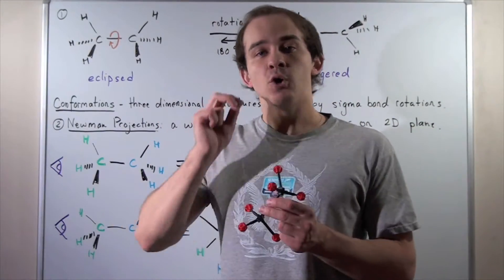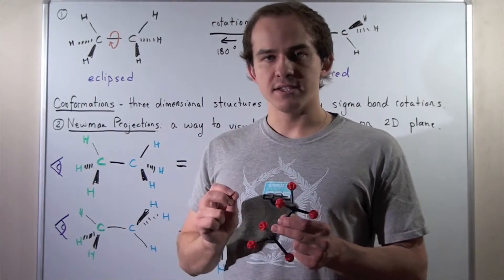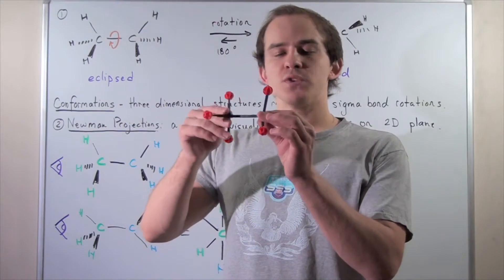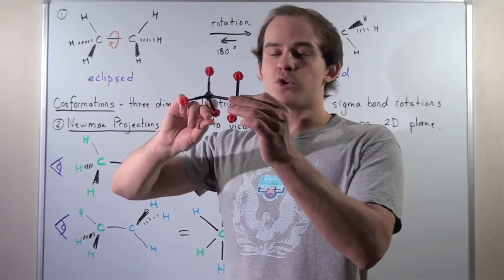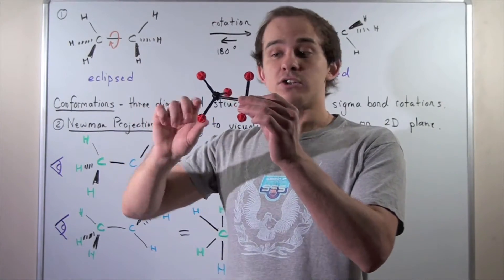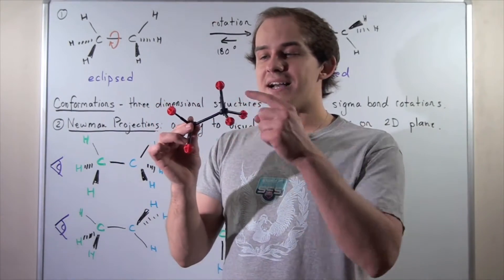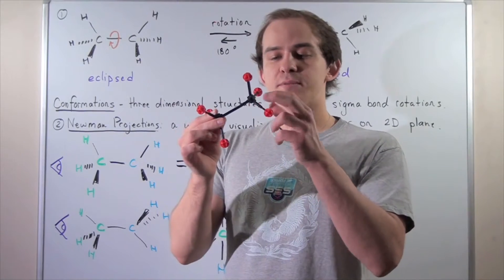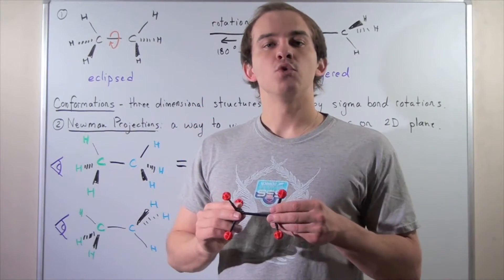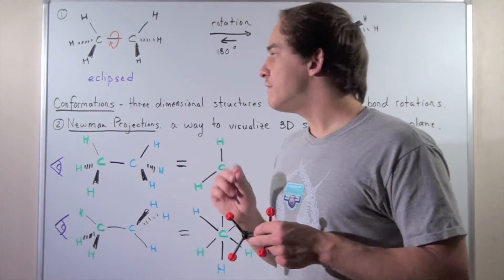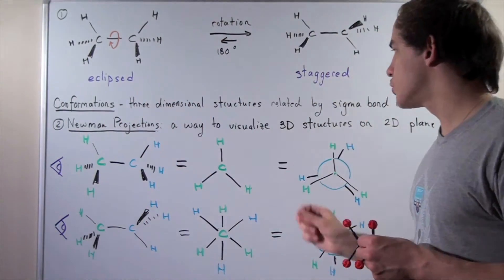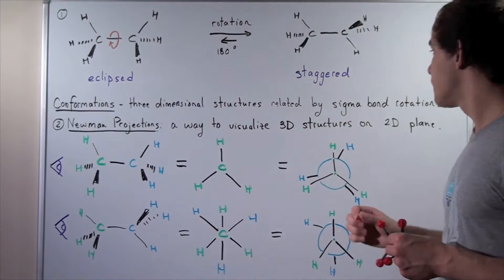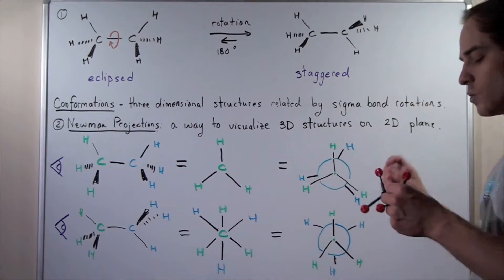One thing you should know about covalent single sigma bonds is that these bonds are able to rotate in space. They could rotate 360 degrees around. Since all these guys are sigma bonds, all of these bonds are able to rotate. In fact, conformations are three-dimensional structures related to one another by sigma bond rotations.